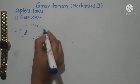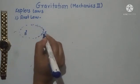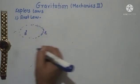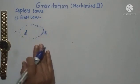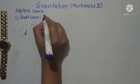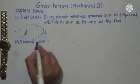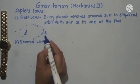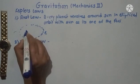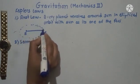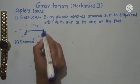So the Earth revolves in an elliptical orbit around the Sun — not only the Earth, but all the planets present in our solar system. The second law is related to the area swept by the radius vector. The radius vector is the vector drawn from the center of the Sun to the center of the Earth.